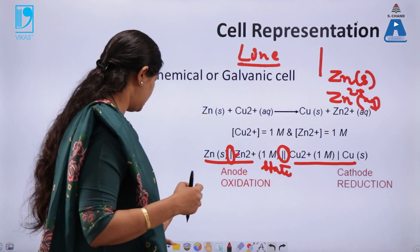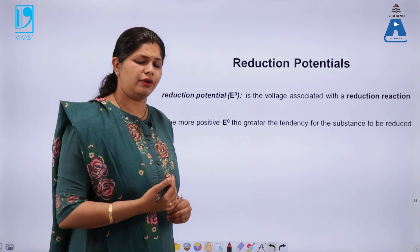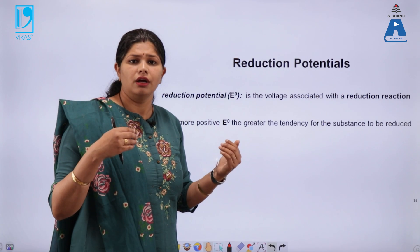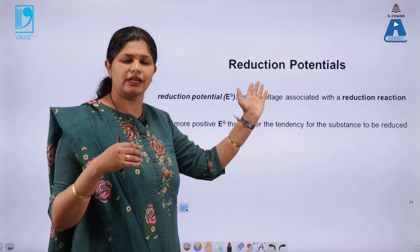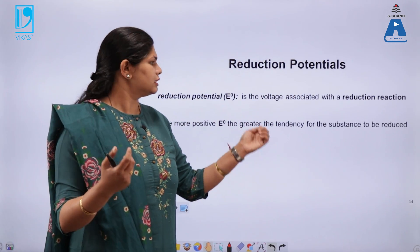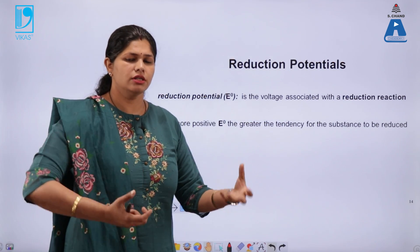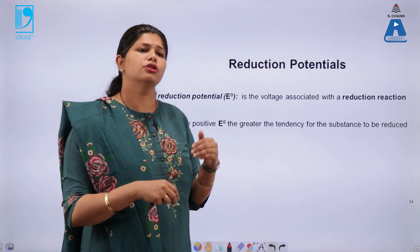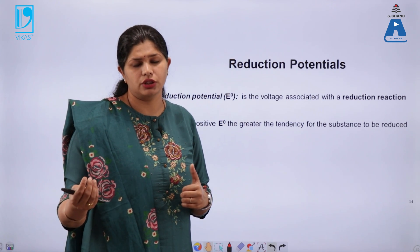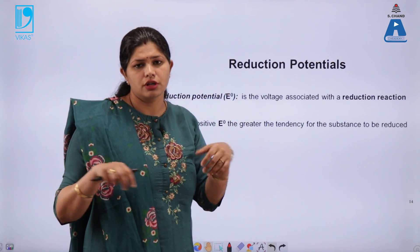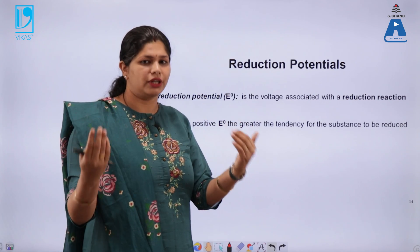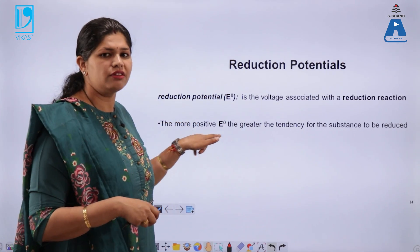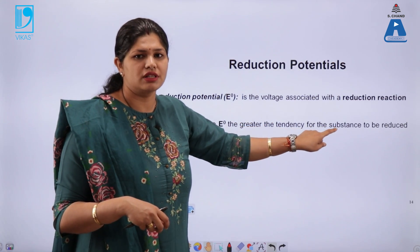This is a general representation of a cell. When reduction and oxidation are happening, we need a parameter that determines how the reactions take place — why copper is not oxidized and zinc not reduced. This is because we have a fixed constant called reduction potential, which is the voltage associated with the reduction reaction. A more positive value of E° means a greater tendency of the substance to get reduced.